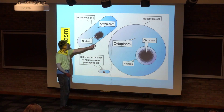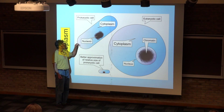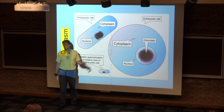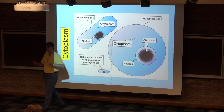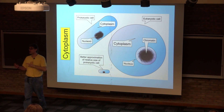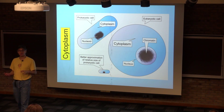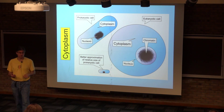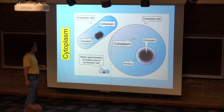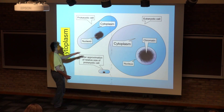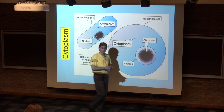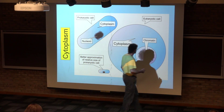This is a prokaryotic cell. There's no nucleus, but there is a nucleoid — a region in which you have a higher concentration of DNA, where the chromosomes of the cells are located. But those chromosomes are not surrounded by a membrane.